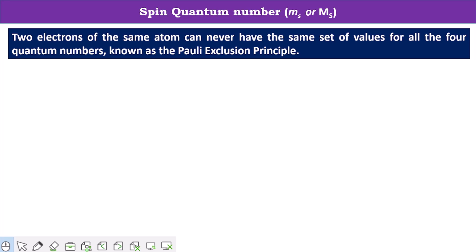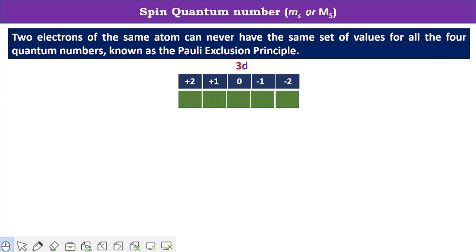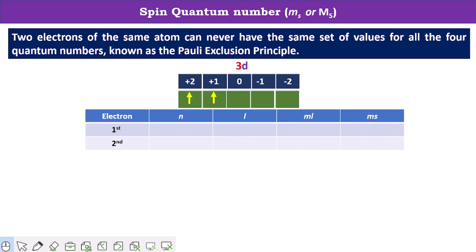Let's understand this concept using an example of 3D electrons. This is the representation of a 3D orbital with two electrons added. Let's calculate all quantum number values. For the principal quantum number, the value 3 in the electronic configuration represents the value of n. Since both electrons belong to the same electronic configuration, the value of n is equal to 3 for both cases.